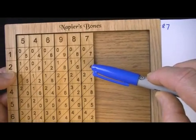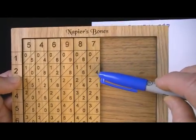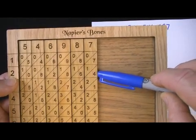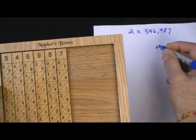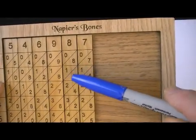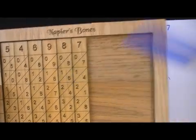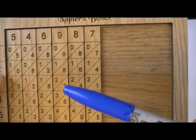Now, the answer to our equation, 2 times that big number, is the furthest number on the right is the 4. The next number is the sum of the numbers in this parallelogram. So 6 plus 1 is 7. So the 10's digit is essentially 7. The next digit, which is the 100's digit, is 8 plus 1 is 9.